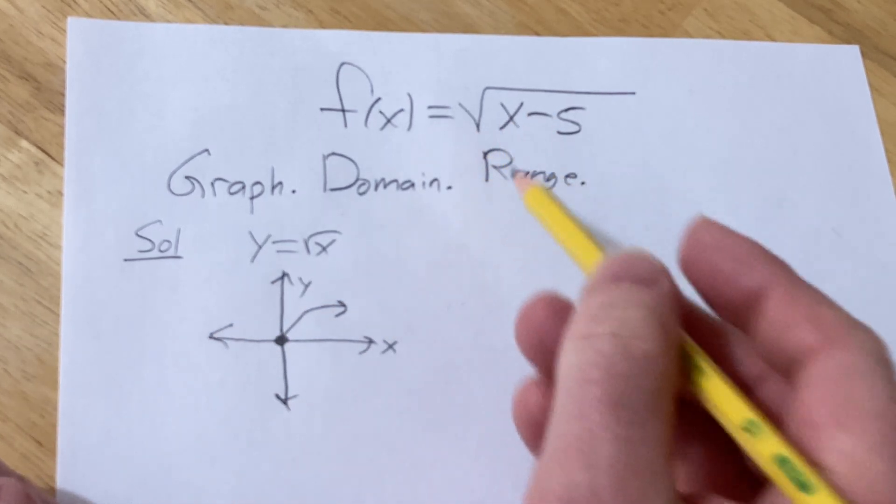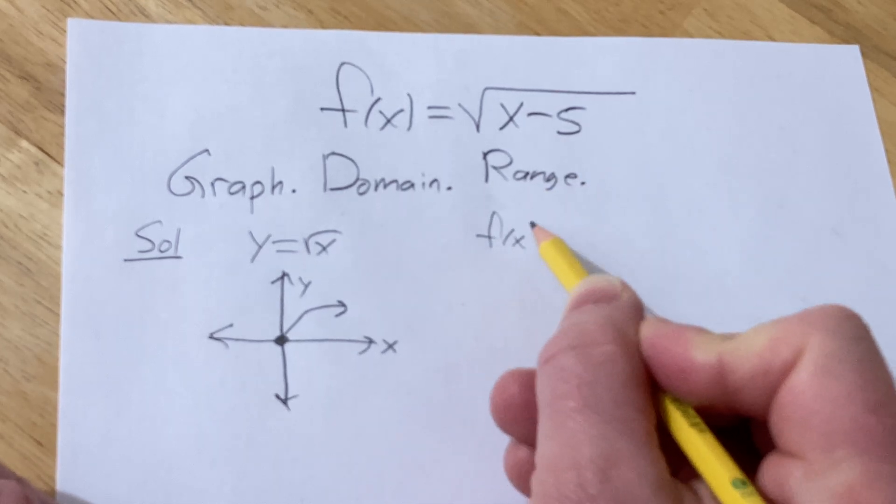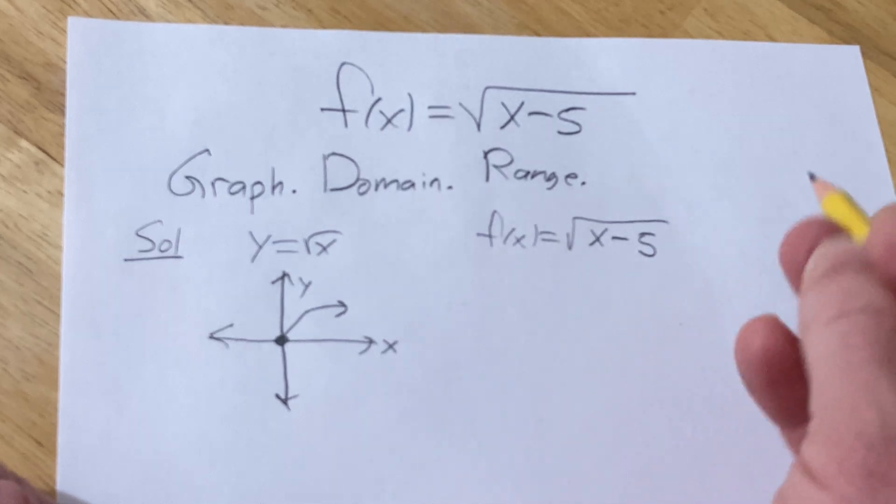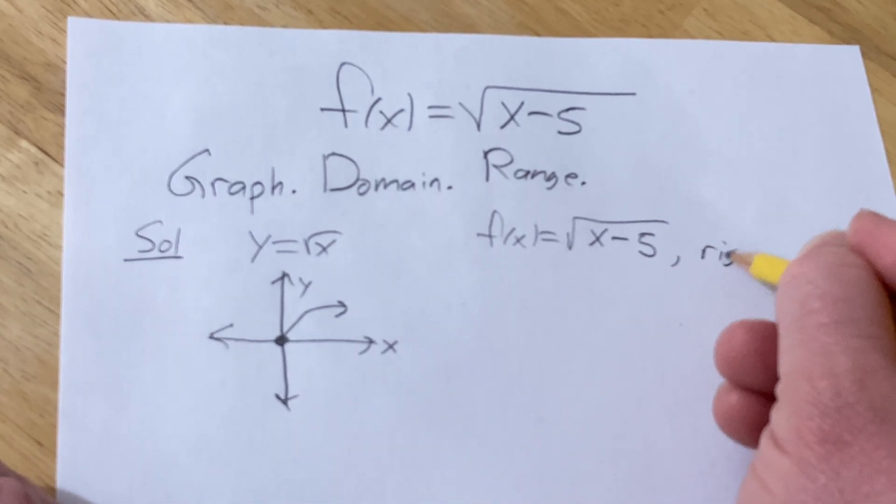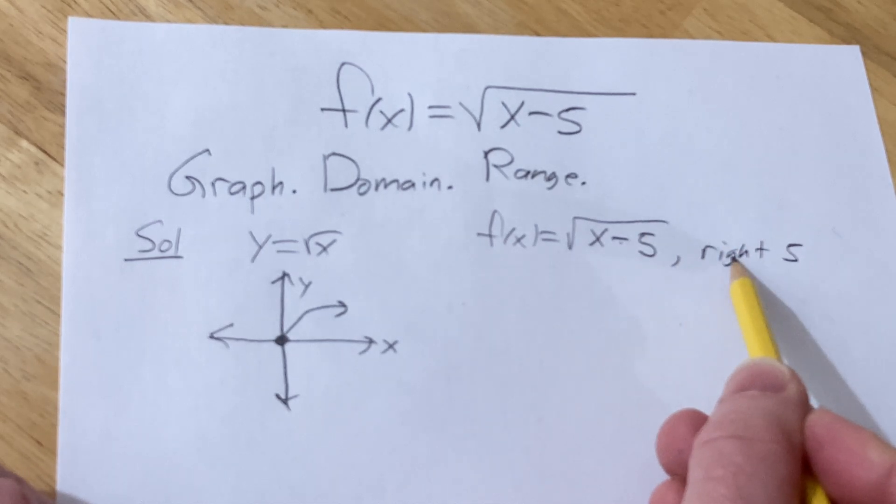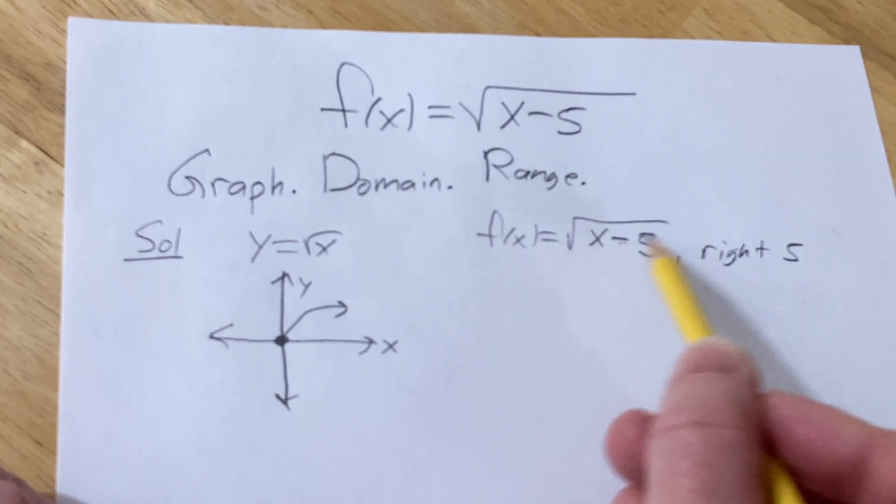And so whenever you have something like this, f(x) equals the square root of x minus 5, whenever you subtract from the x, you want to go right by 5. It's always backwards. When you subtract from the x, you go right 5. When you add to the x, you go left 5.